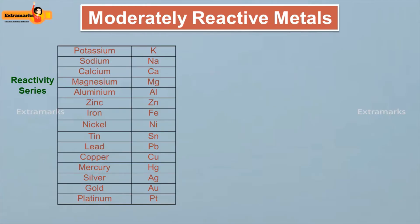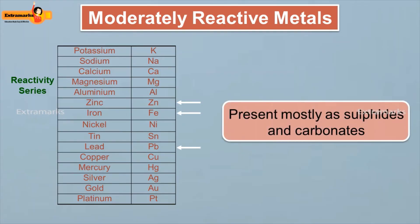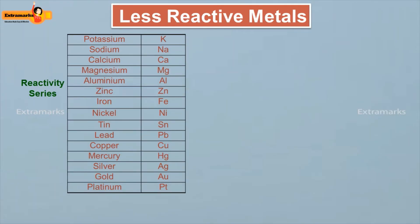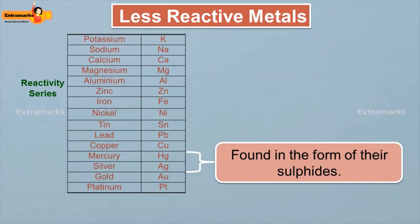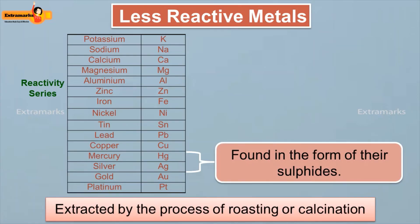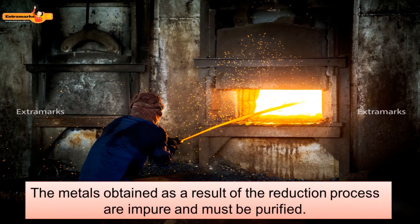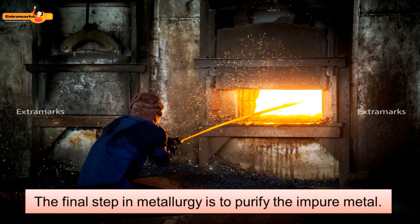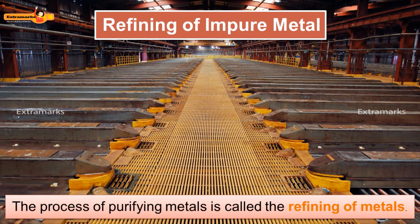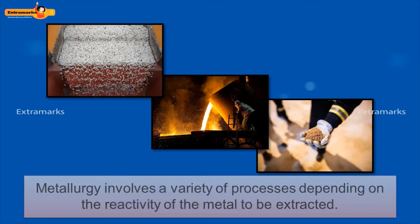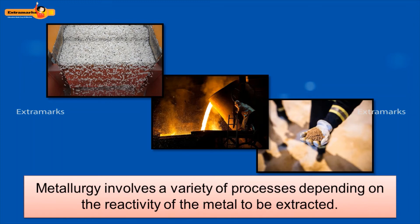Moderately reactive metals such as zinc, iron, and lead are present mostly as sulphides and carbonates. Some of the less reactive metals present at the bottom of the reactivity series, such as copper and mercury, are also found in the form of their sulphides. These are extracted by the process of roasting or calcination. The metals obtained as a result of the reduction process are impure and must be purified. The final step in metallurgy is to purify the impure metal. The process of purifying metals is called the refining of metals. Thus, metallurgy involves a variety of processes depending on the reactivity of metal to be extracted.